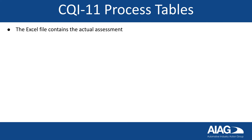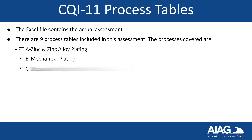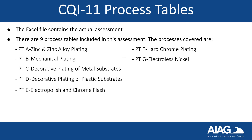The Excel file contains the actual assessment. There are nine process tables included in this assessment. The nine processes covered are zinc and zinc alloy plating, mechanical plating, decorative plating of metal substrates, decorative plating of plastic substrates, electropolish and chrome flash, hard chrome plating, electrolysis nickel, hydrogen relief, and equipment.